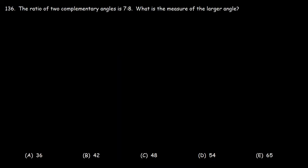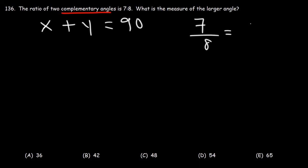Number 136: The ratio of two complementary angles is 7 to 8. What is the measure of the larger angle? First, complementary angles add up to 90. Let's say the two angles are x and y, so x plus y equals 90. The ratio 7 to 8 means 7/8 equals x/y, assuming x is the smaller angle and y is the larger one.